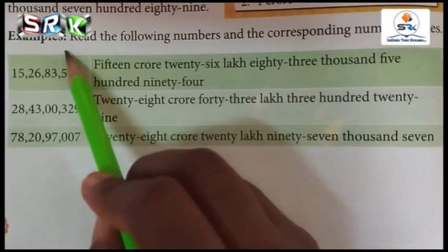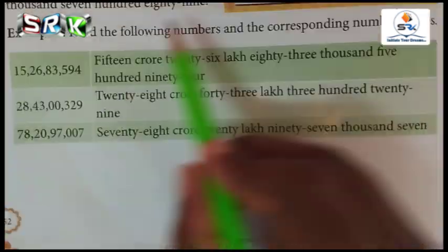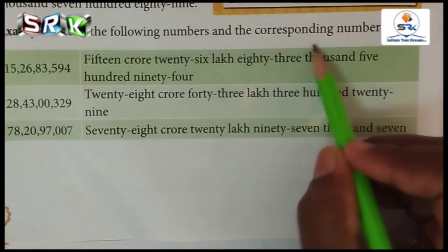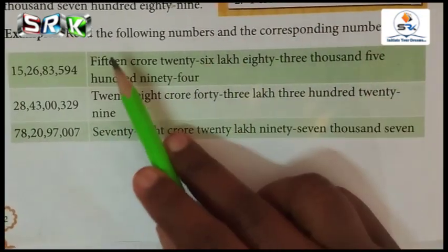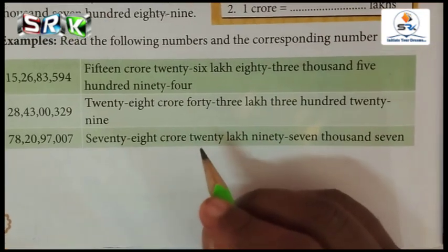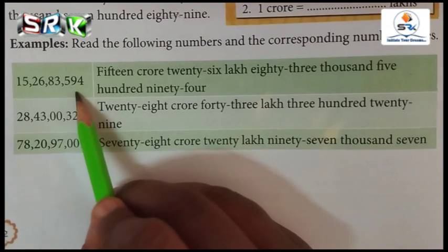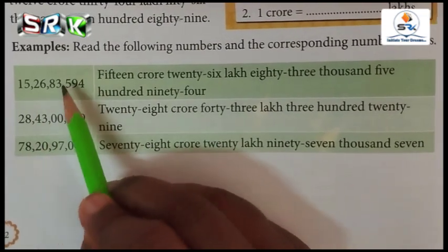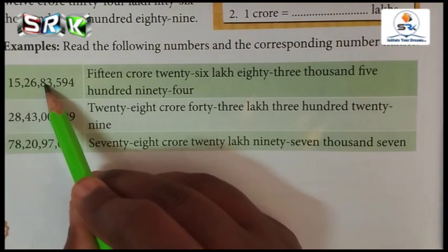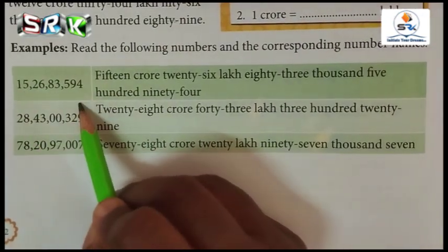Now see these examples. I will read the line: read the following numbers and write the corresponding number names. First of all, read the numbers and write the number names. See this first number — how many digits are given here? Count the numbers: 1, 2, 3, 4, 5, 6, 7, 8, 9 — nine digits are given here.